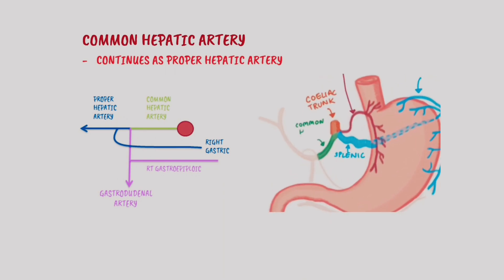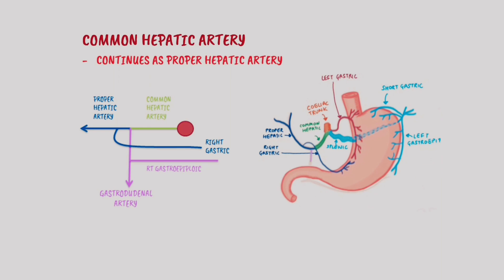The common hepatic artery continues as the proper hepatic artery, which divides into the right gastric artery that follows the lesser curvature of the stomach. The common hepatic artery also continues downwards as the gastroduodenal artery, which divides into the right gastroepiploic artery that follows the greater curvature of the stomach.